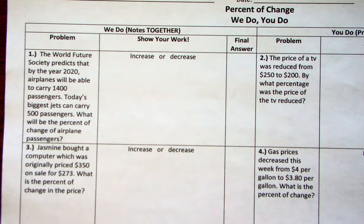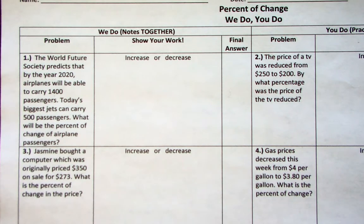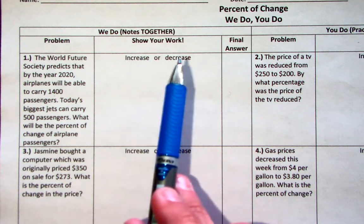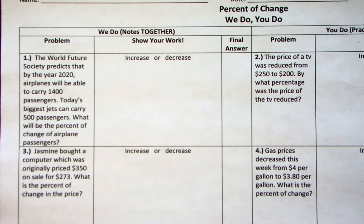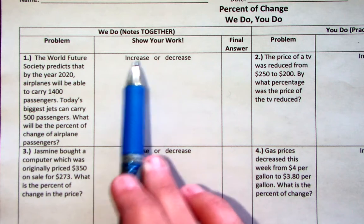On your test there are two different answers you're going to have for each question. One of the answers: you have to tell me is it an increase or a decrease. The other answer will actually be a percentage answer. So if we look at number one — the World Future Society predicts that by the year 2020 airplanes will be able to carry 1,400 passengers. Today's biggest jet can carry 500 passengers. What will be the percent of change of airplane passengers?